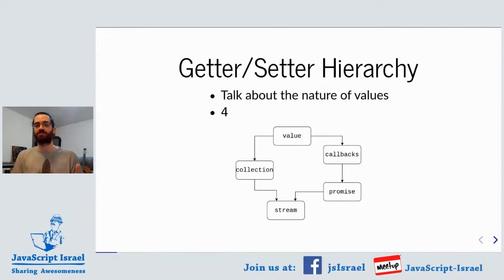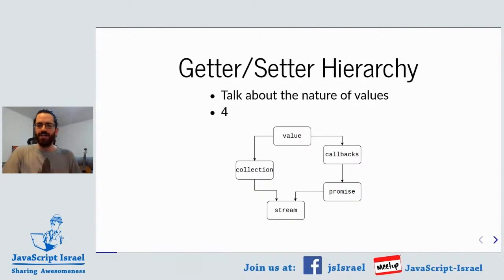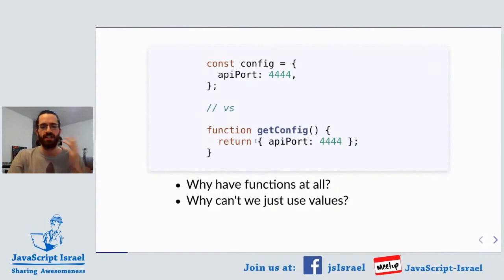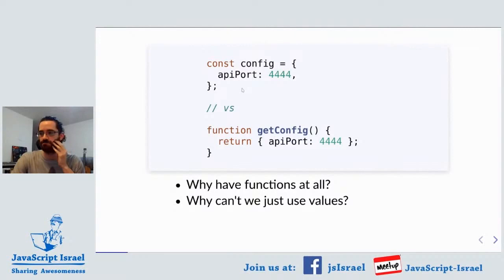By the way, there are going to be points in the talk where I'm going to ask a question — please, if you feel like talking, do a comment. I'll try and see where this goes. So let's start with something very non-controversial. We have an object like a config with an API port. And we also have a function, getConfig, which returns the same object. So I'm going to start with a very obvious question: why do we need functions? Why have both of these things? Why not always use values and objects?